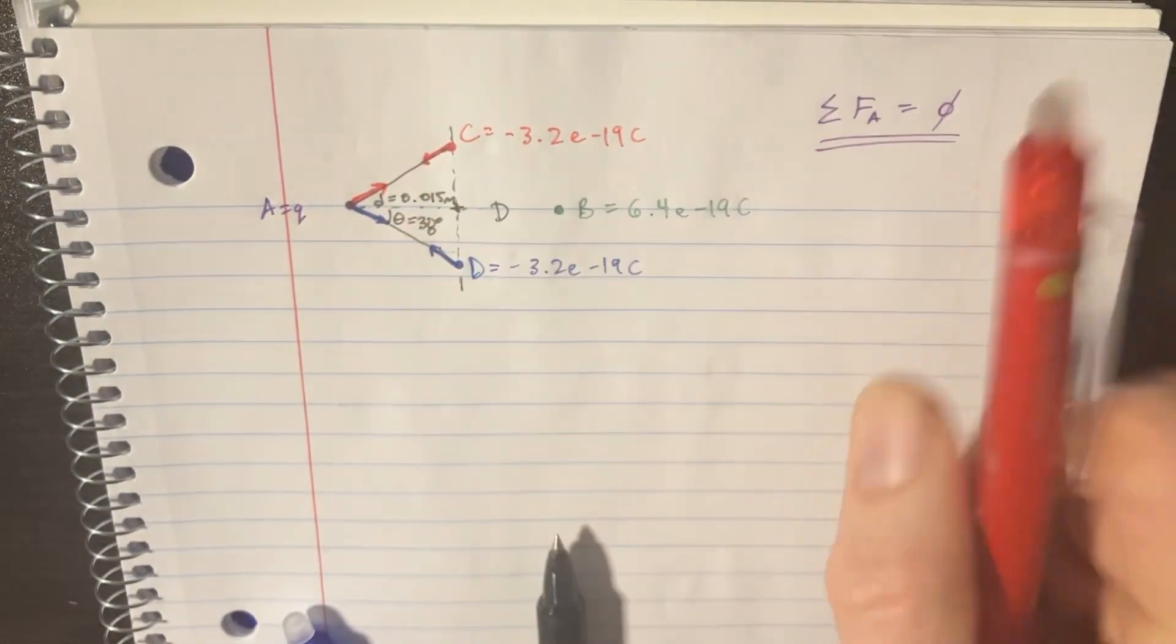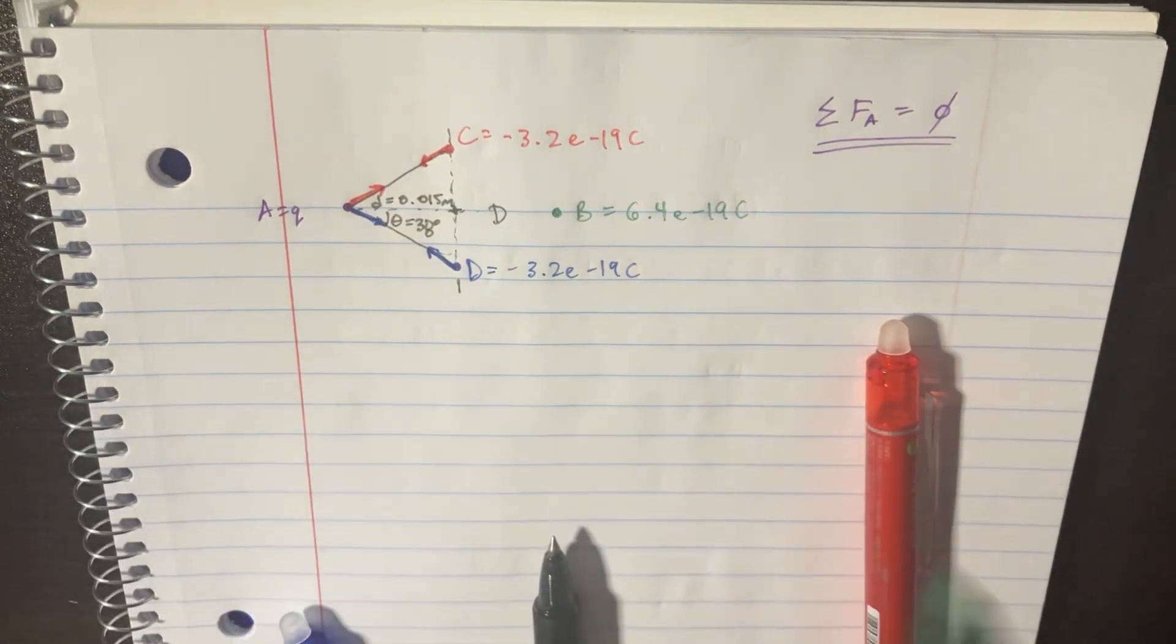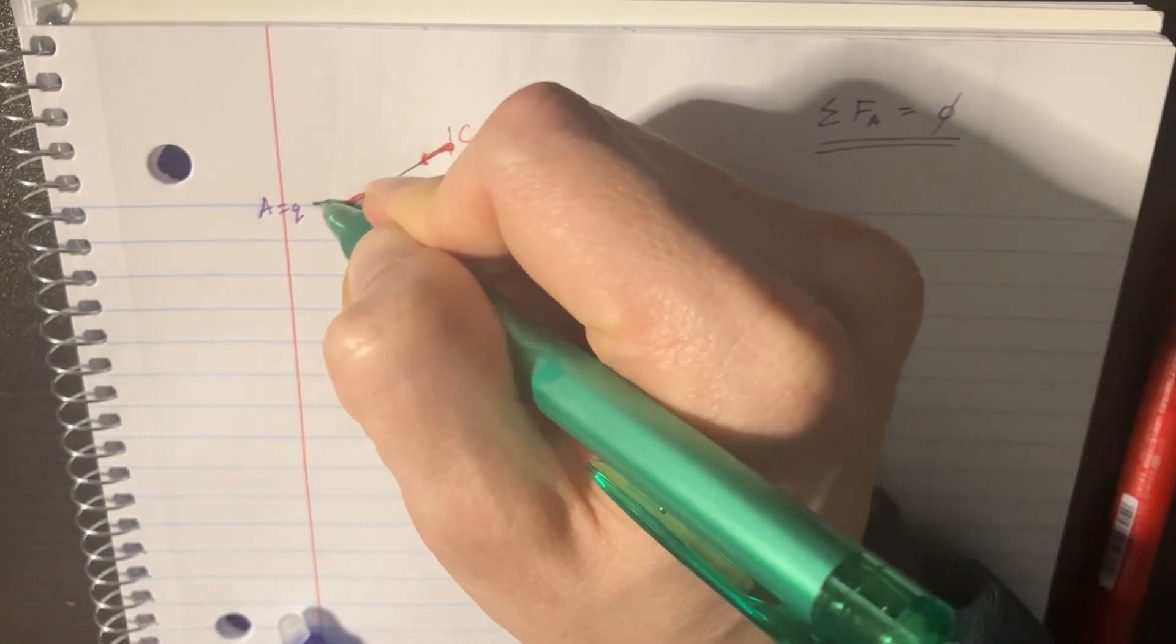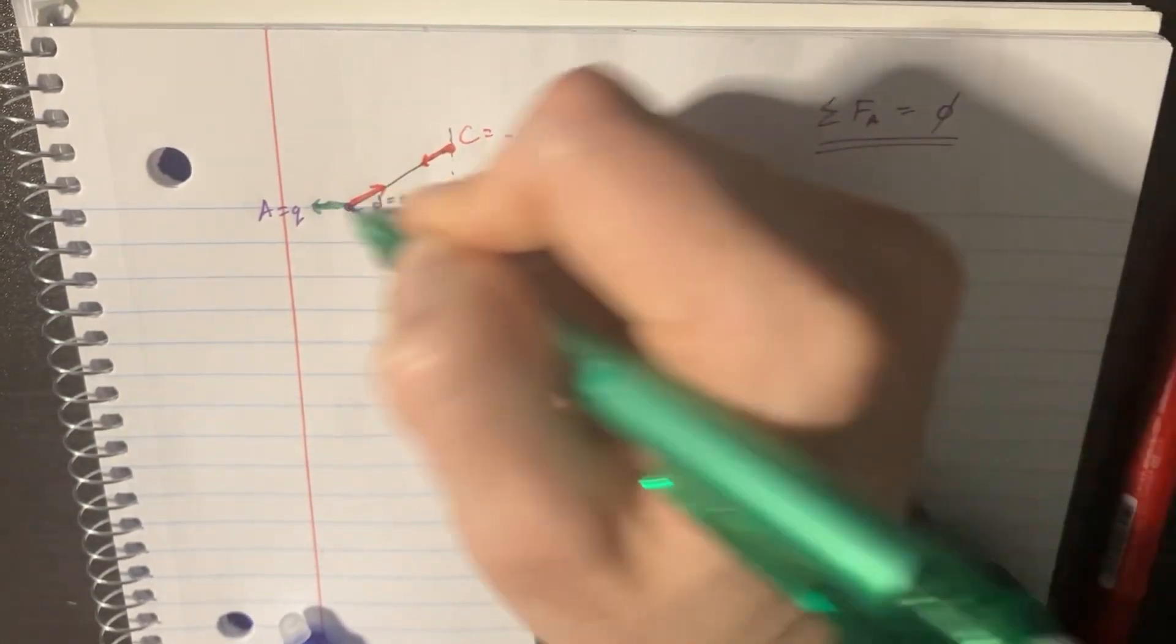But then we also have the other one, the green, which is counteracting this, and it's pushing in this direction with about the same magnitude that those two are pushing in that direction.